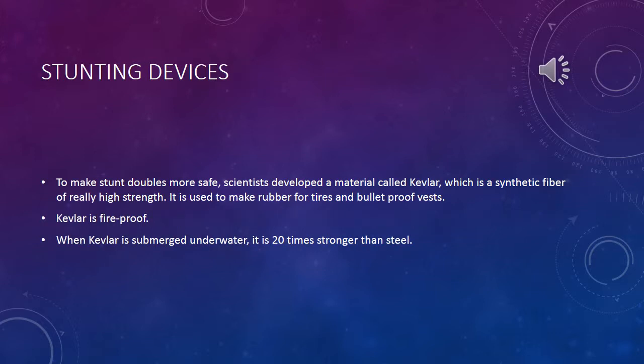Stunting devices. To make stunt doubles more safe, scientists have developed a material called Kevlar, which is a synthetic fiber of really high strength. It is used to make rubber for tires and bulletproof vests. Kevlar is fireproof and won't dissolve until it reaches 500 degrees Celsius. When Kevlar is submerged beneath water, it is 20 times stronger than steel. Most stunt doubles use Kevlar in their helmets and bulletproof vests. The next time you go for a bike ride, thank Kevlar for your safety.